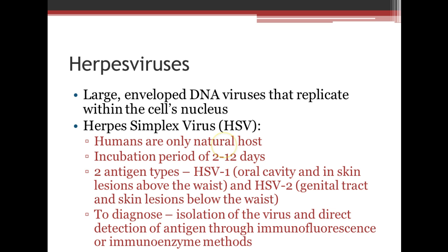Next is the herpes virus, specifically herpes simplex virus (HSV). These are large enveloped DNA viruses that replicate within a cell's nucleus. Humans are the only natural host, and incubation usually takes 2 to 12 days. There are two types: HSV-1, traditionally associated with lesions above the waist, and HSV-2, associated with genital lesions below the waist, though both are now found in both areas. Diagnosis involves isolating the virus and direct antigen detection through immunofluorescence or immunoenzyme methods.